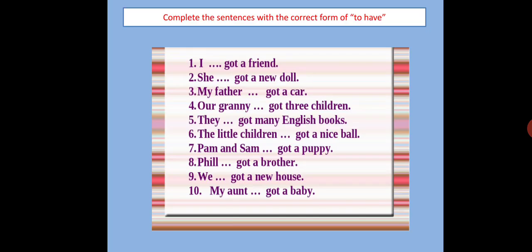Task number three. Complete the sentences with a correct form of to have. Related to today's grammar on to have, you should put the correct auxiliary verb in the blanks: have got or has got.